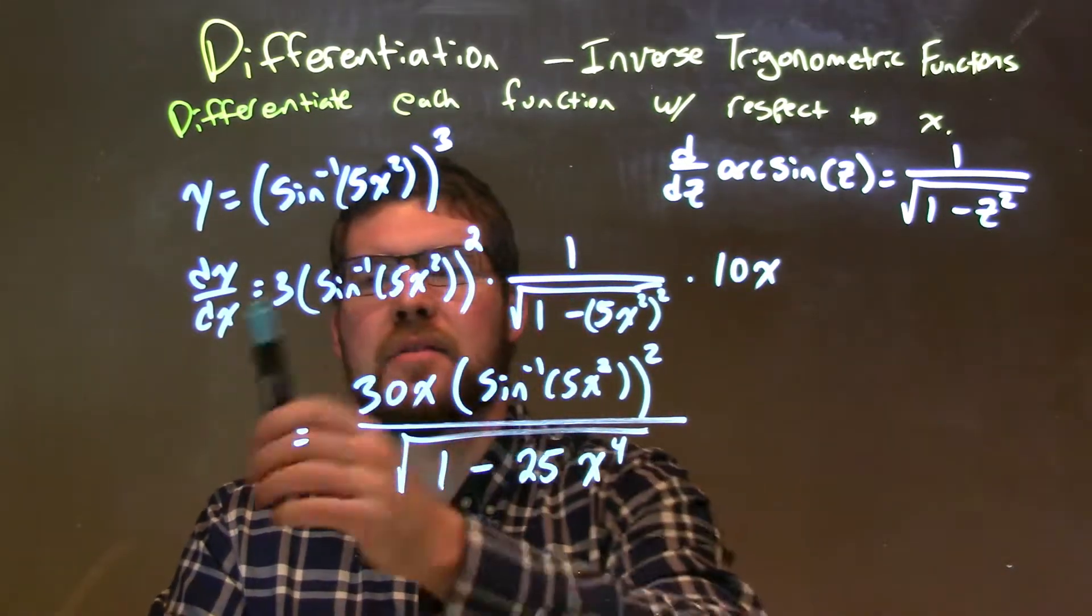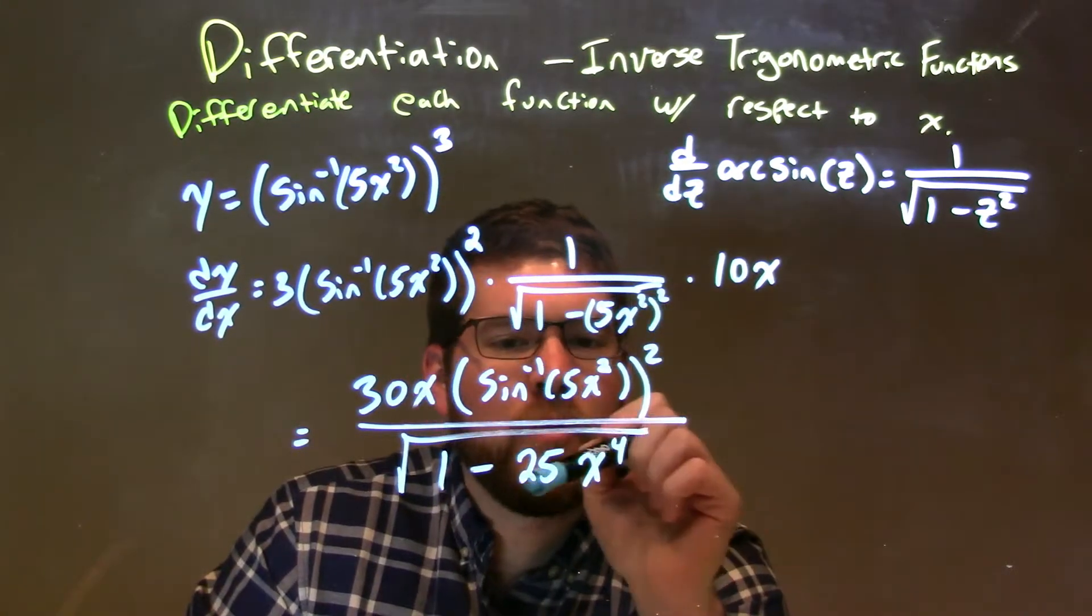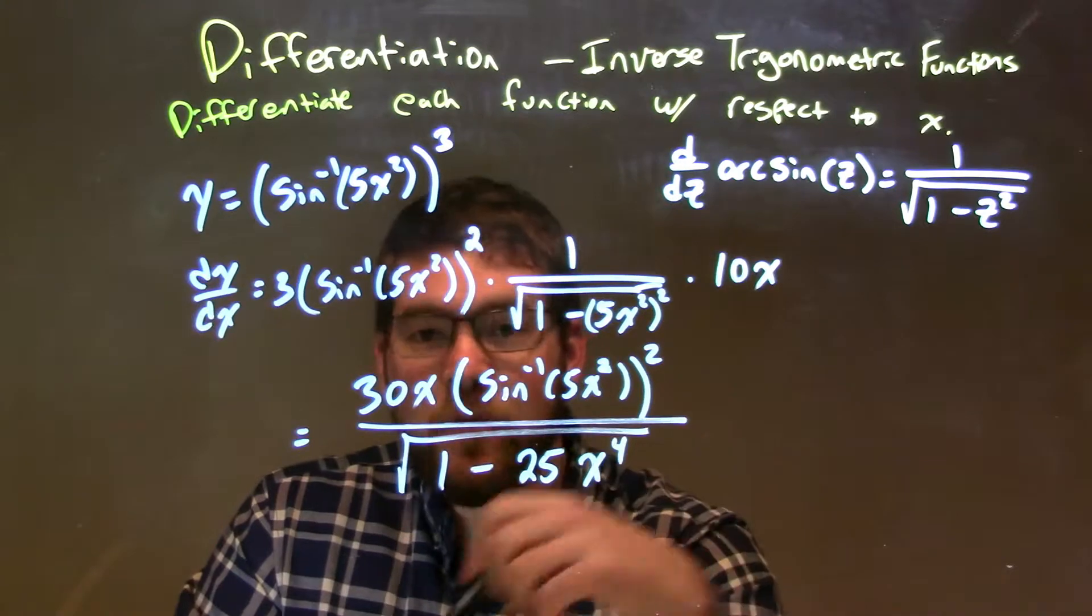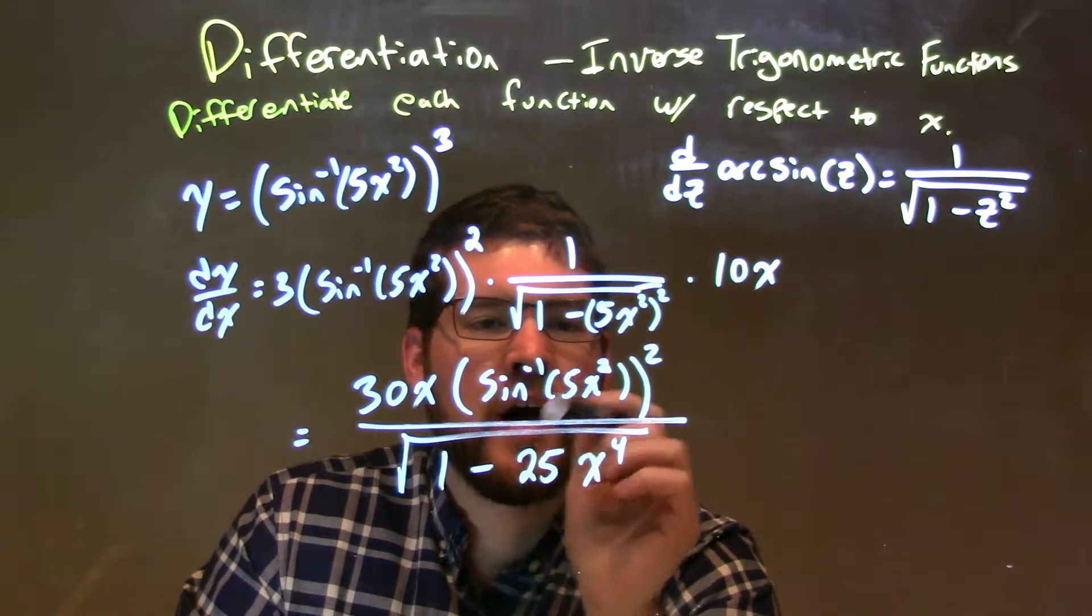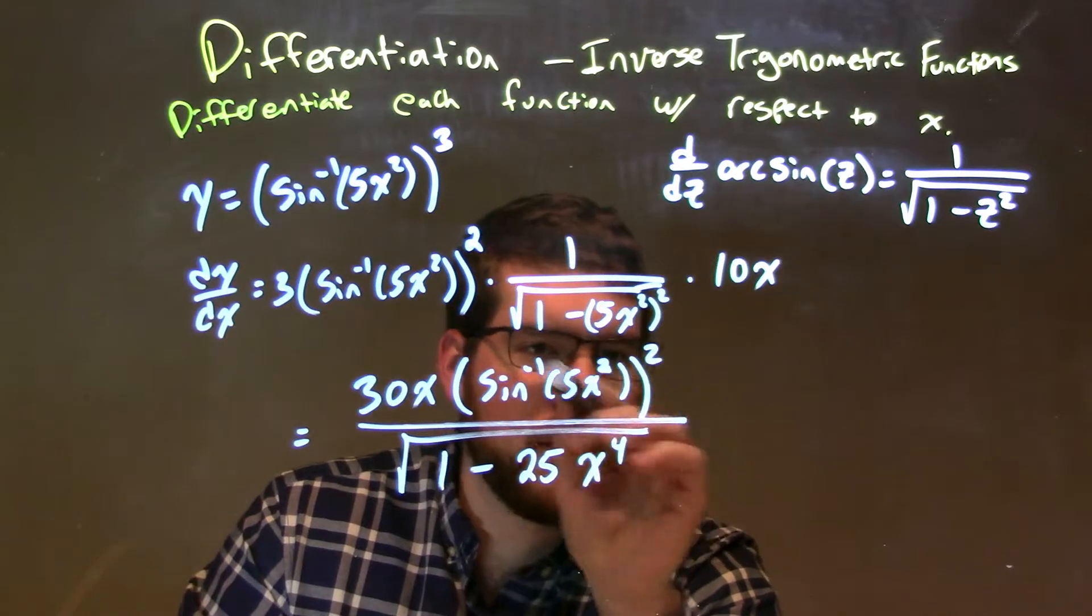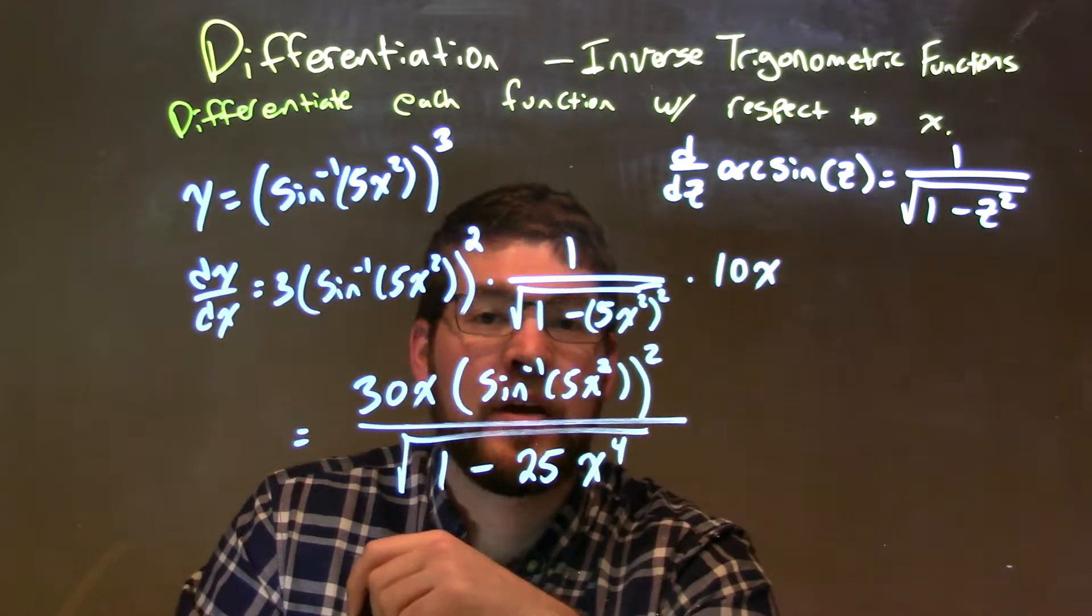If I simplify it, 10x times 3 gives 30x. And then we use 5x squared all squared with 25x to the fourth, giving me my final answer here of 30x times the arc sine of 5x squared, all that part squared, all over 1 minus 25x to the fourth power.